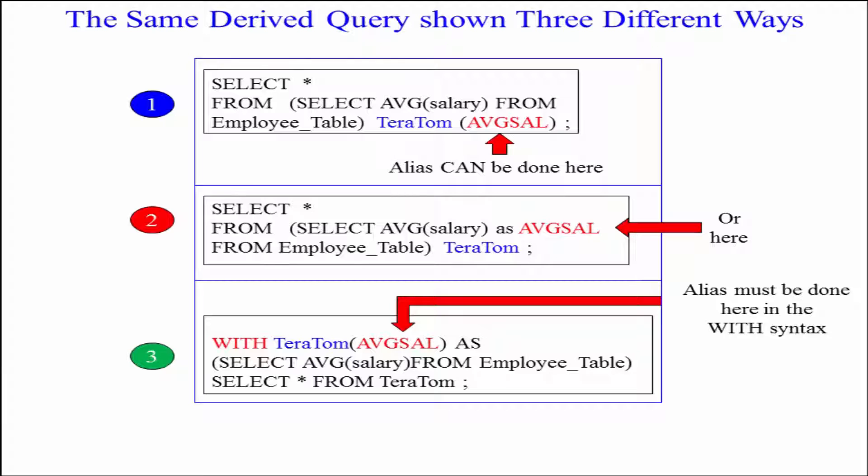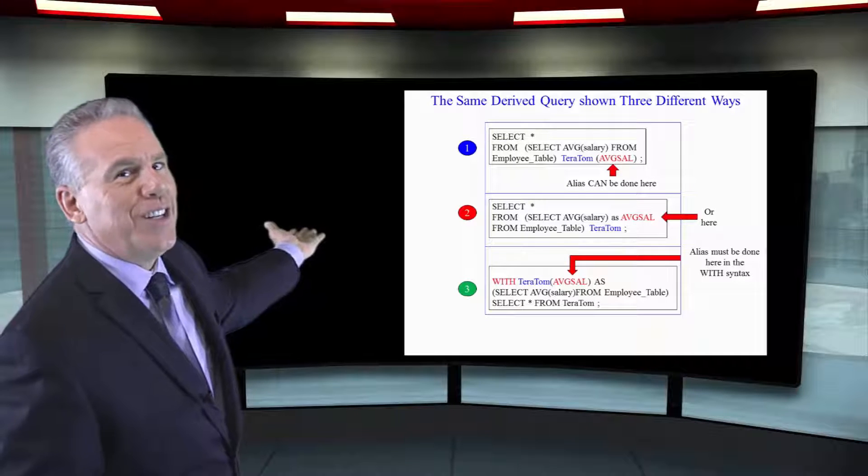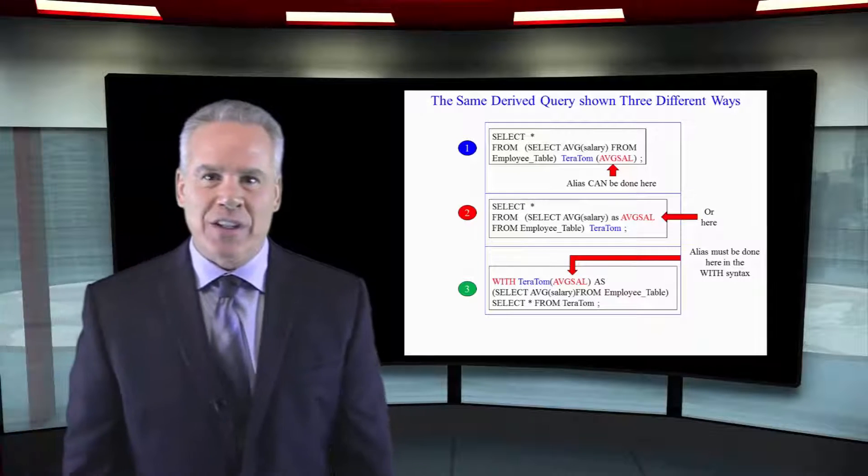Here's our first derived query, and we're going to select the average salary. We're going to put it in a table called Teratom, and then we're going to list and say this one column that we have in our table. It's called AVGSAL, and that's what's going to come as a result.